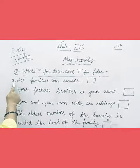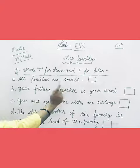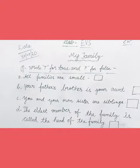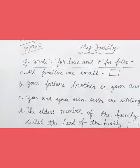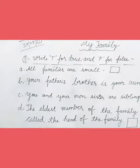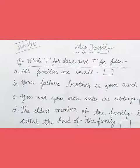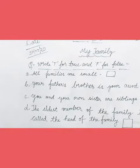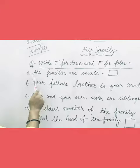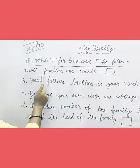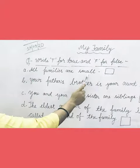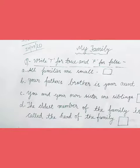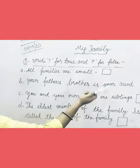First sentence — read it children: 'All families are small.' So children, think about it. Go back to the chapter in which you have read — there are two types of family: one is nuclear family, meaning small family, and big family. So the sentence says all families are small, but it is false because there are two types of family, small family and big family.